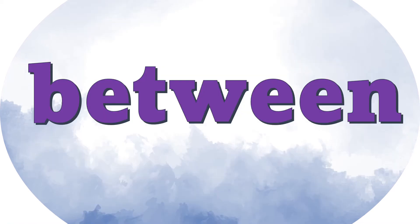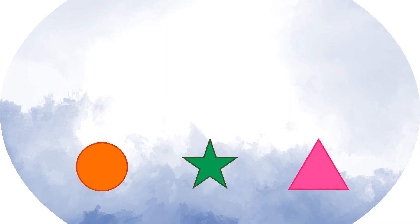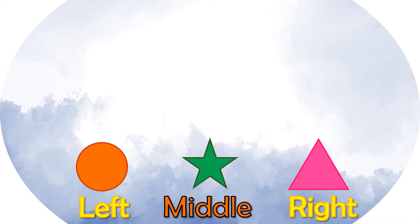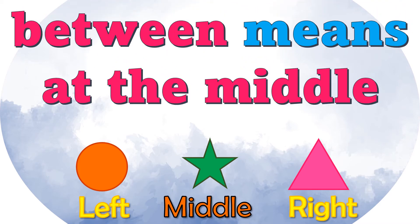Before we proceed to our lesson, let's define the word 'between.' Look at these shapes. The circle is at the left side, the triangle is at the right side, and the star is at the middle. Between means at the middle, so the star is in between.